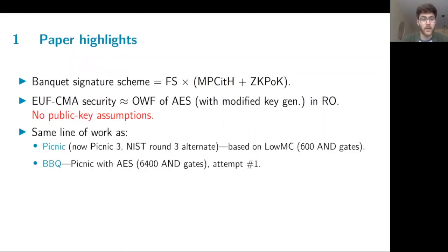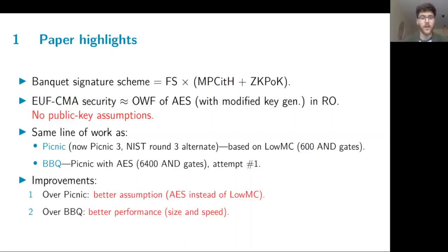It's work that follows the same line as PICNIC, which is now in its third iteration, as a NIST alternative finalist. The PICNIC scheme is based on the LowMC block cipher, which has about 600 AND gates. It's also a continuation of a previous work called BBQ, which was the first attempt to instantiate PICNIC style signatures with the AES block cipher, which has about 11 times more AND gates than LowMC. Our paper presents several improvements over these two previous works. Not only do we have a better assumption in the sense that we use AES over LowMC, but we achieve better performance in both signature size and speed.